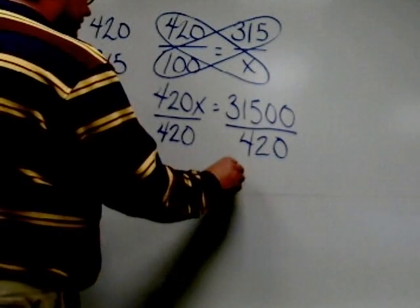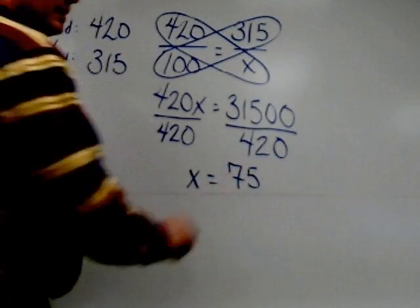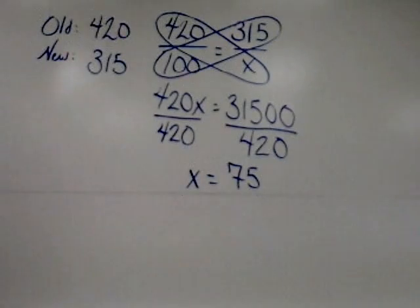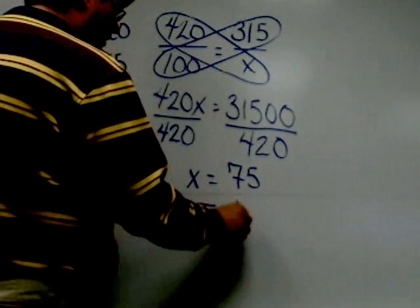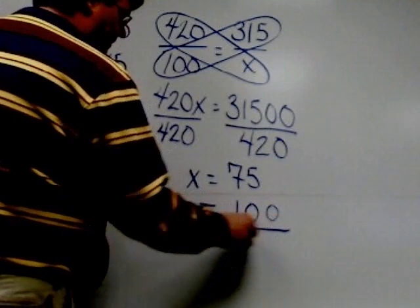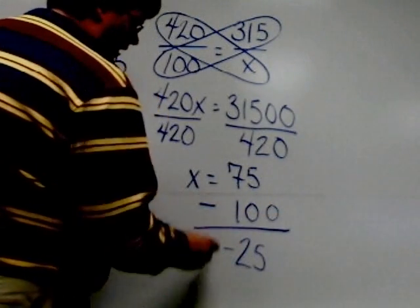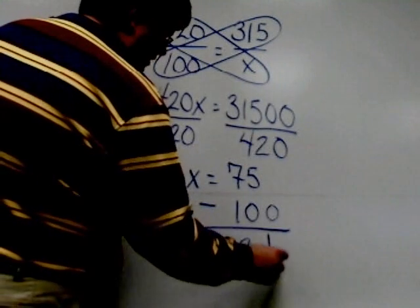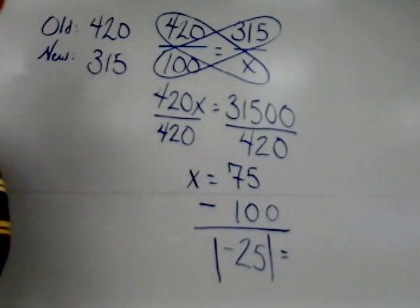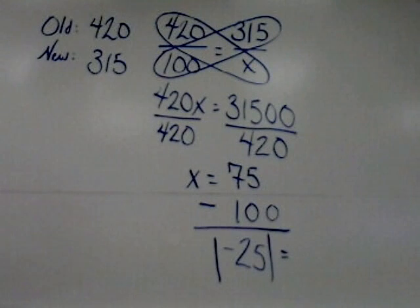Now remember that's not the concluding step though. I still have to subtract 100. When I do 75 minus 100 I get negative 25, and then I have to take the absolute value. The absolute value being the number of jumps the number is away from zero on the number line. Negative 25 would be 25 jumps away from zero on the number line.